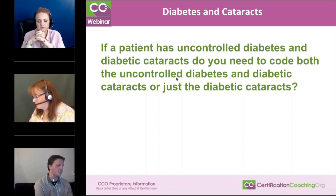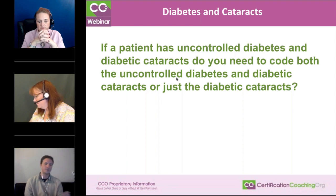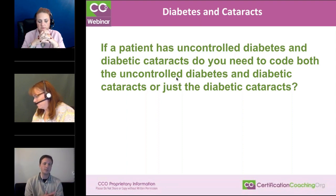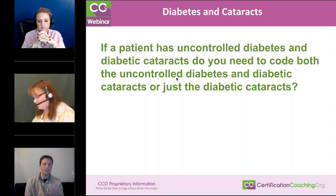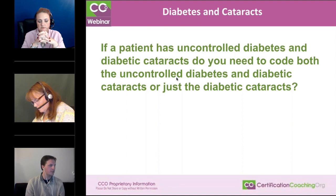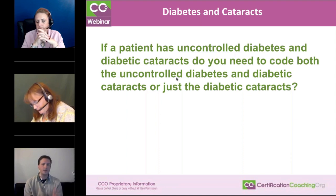When you look up diabetes and go to 'uncontrolled,' it refers you to either hypoglycemia or hyperglycemia. So if it's hyperglycemia, it's E1165. And then you have your diabetic cataract code — if it's type two, that's E1136. You need to query the provider because uncontrolled diabetes cannot be coded and assumed to correlate to E1165.